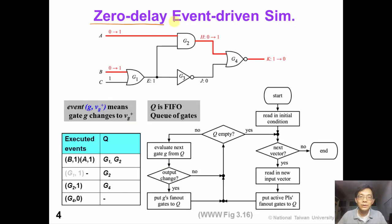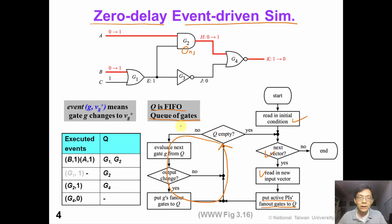This slide shows a zero delay event-driven simulation example. In this example, all the gate delays are assumed to be zero. At the beginning, we read in the initial condition of the circuit and a new input vector. We put active primary input fan-out gates into a queue, which is a first-in first-out queue of gates. In this loop, we execute the events — every time we evaluate a gate from the queue, if the output does not change, we do nothing. If the output does change, we execute this change and put the gate G2 fan-out gate into the queue. We continue in this loop until the queue becomes empty.